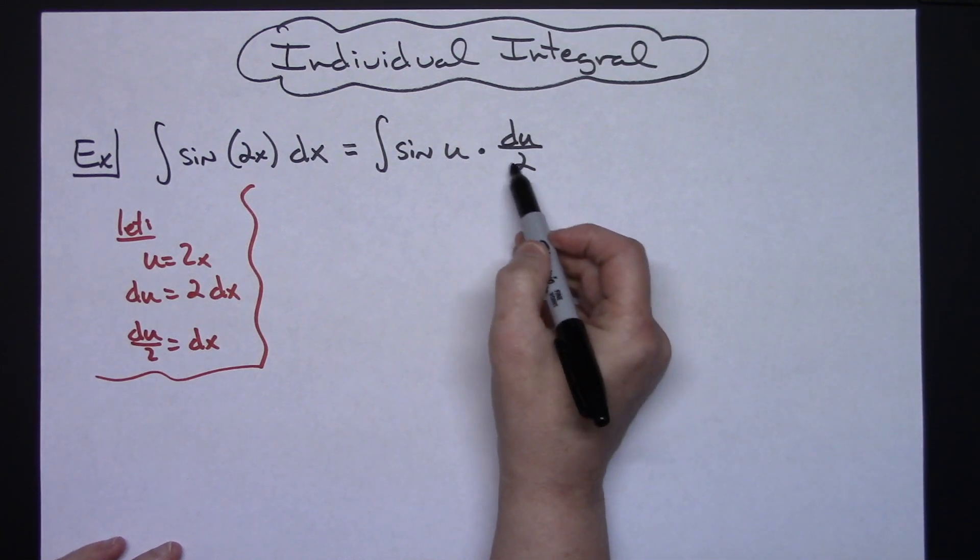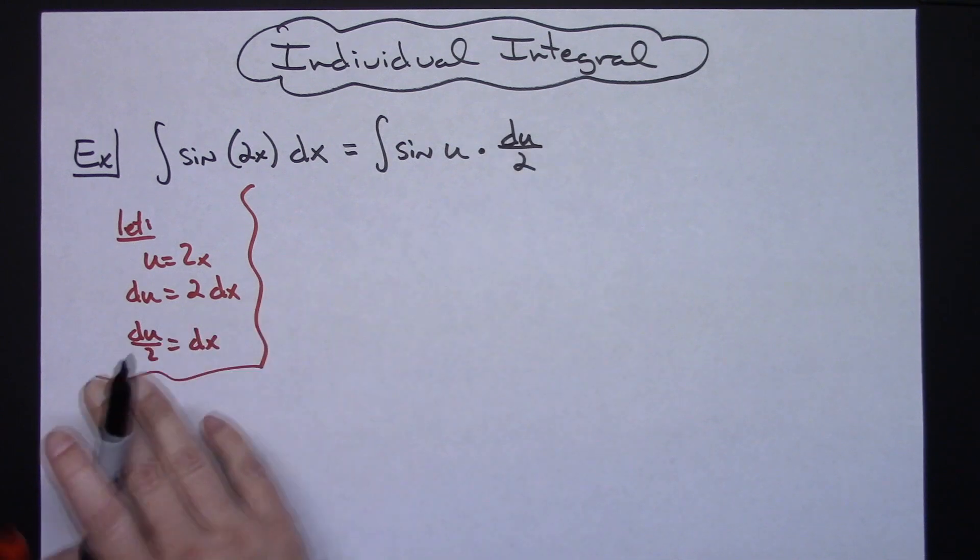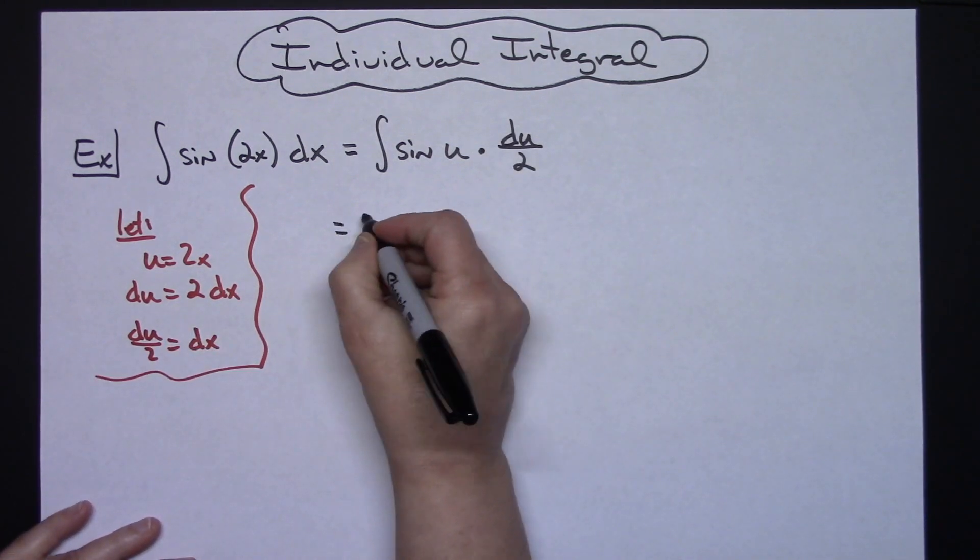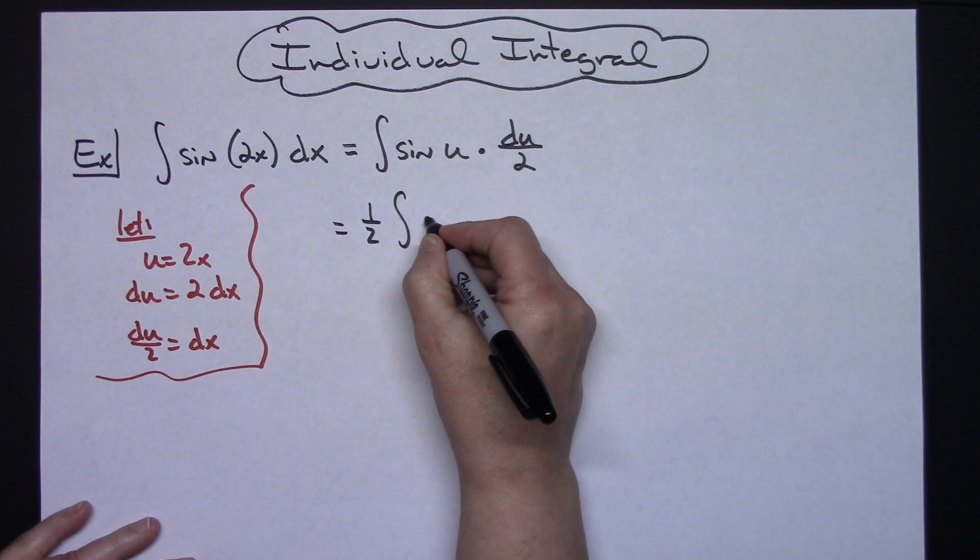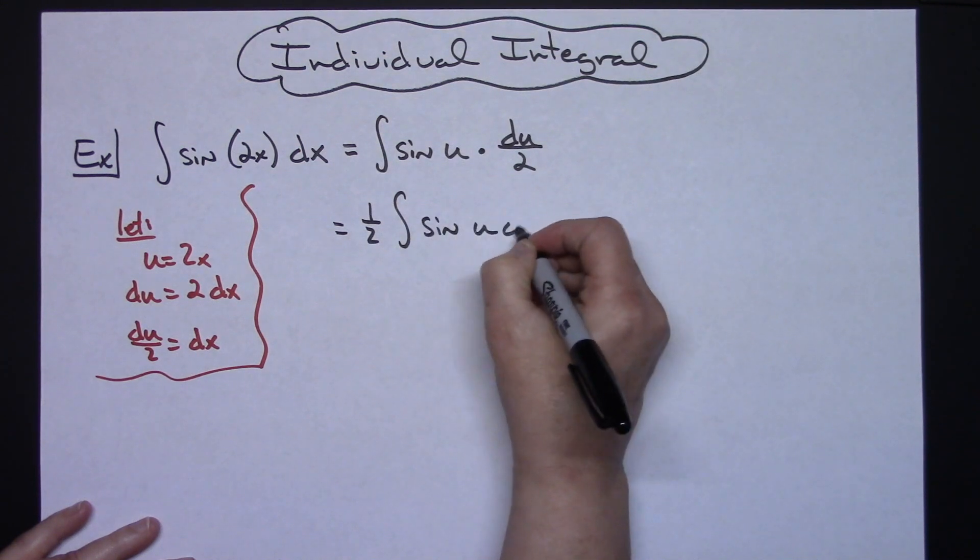What this is going to let you see here is that you can easily factor out that 1 half. So we'll pull the 1 half out in front of the integral. Then I'll just have the straight integral of sine u du.